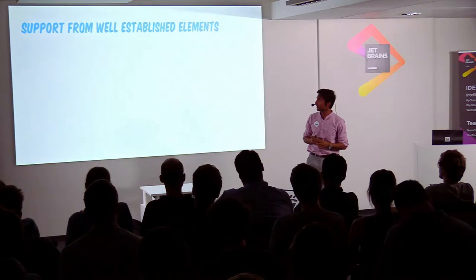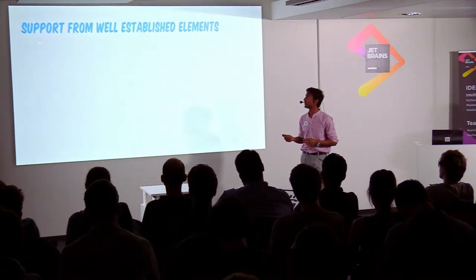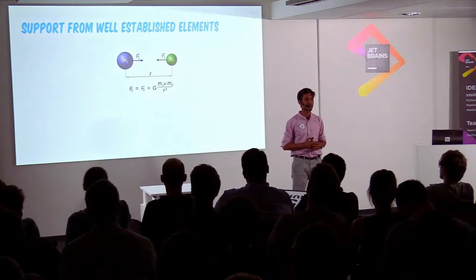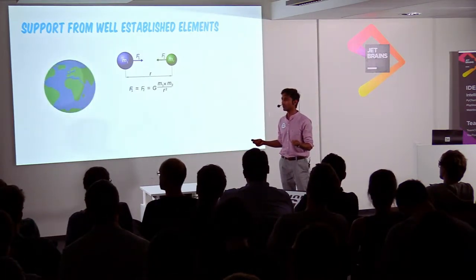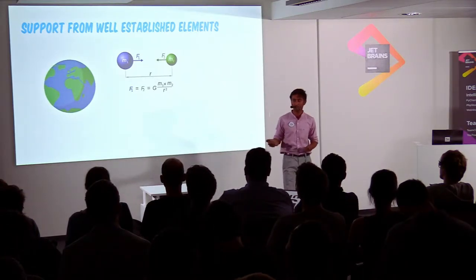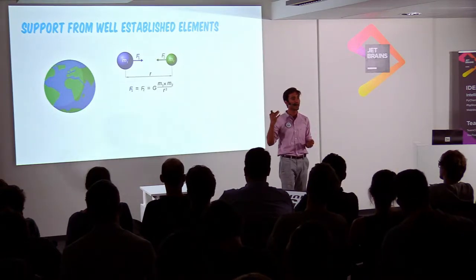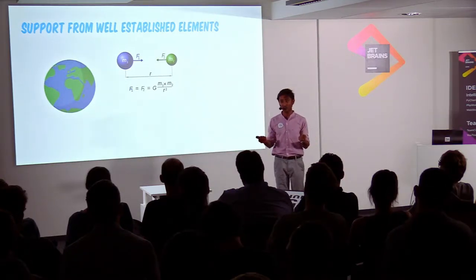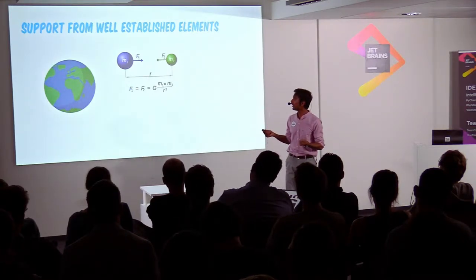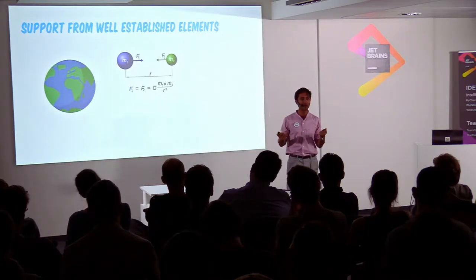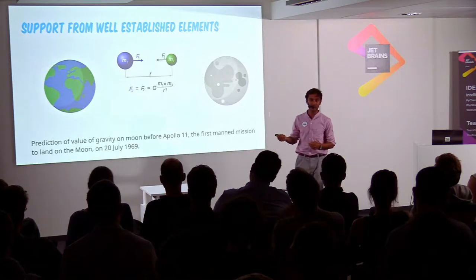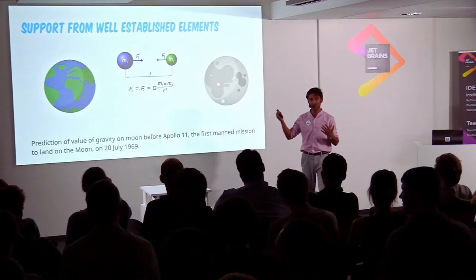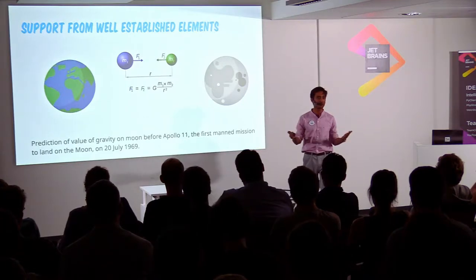The next factor a hypothesis should have is support from well-established elements. Using Newton's law, I can find gravity on Earth pretty easily. However, using the same formula, I can hypothesize gravity on pretty much any other planet, even though I have not even conducted that experiment — because it is based on a very well-established law. We actually did that before Apollo 11, the first manned mission to the Moon. We were able to calculate the gravity on the Moon even before we landed there, and when we did and measured it, it was correct.